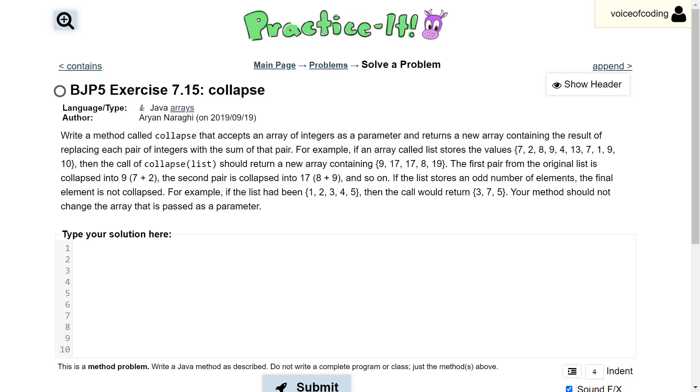If the list stores an odd number of elements, the final element is not collapsed. For example, if the list had been 1, 2, 3, 4, 5, then the call would return 3, 7, 5. Your method should not change the array that is passed as a parameter.